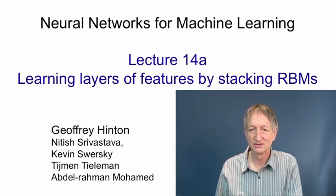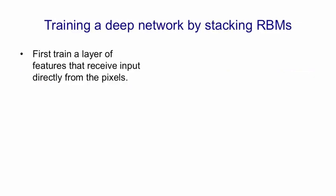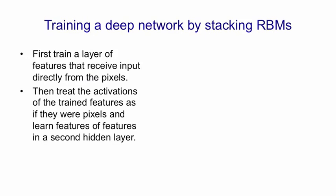You actually get something that looks much more like a sigmoid belief net. This was a big surprise — it was very surprising that we'd actually solved the problem of how to learn deep sigmoid belief nets by giving up on it and focusing on learning undirected models like Boltzmann machines. Using the efficient learning algorithm for restricted Boltzmann machines, it's easy to train a layer of features that receive input directly from the pixels. We can then treat the patterns of activation of those feature detectors as if they were pixels, and learn another layer of features in a second hidden layer.